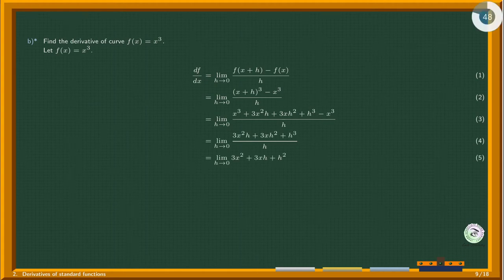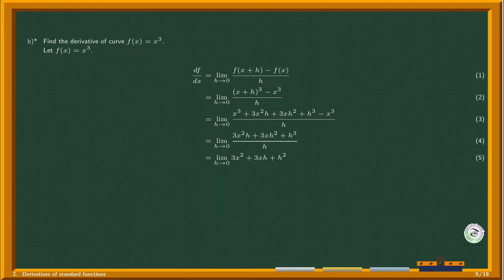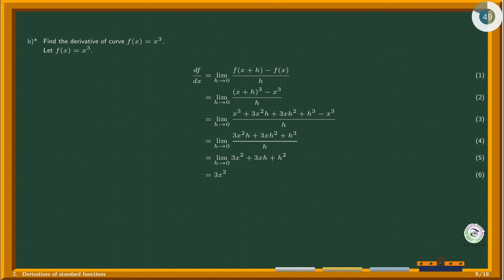x is not affected by h going to 0, but terms with h go to 0. Therefore, taking the limit, we get 3x squared.